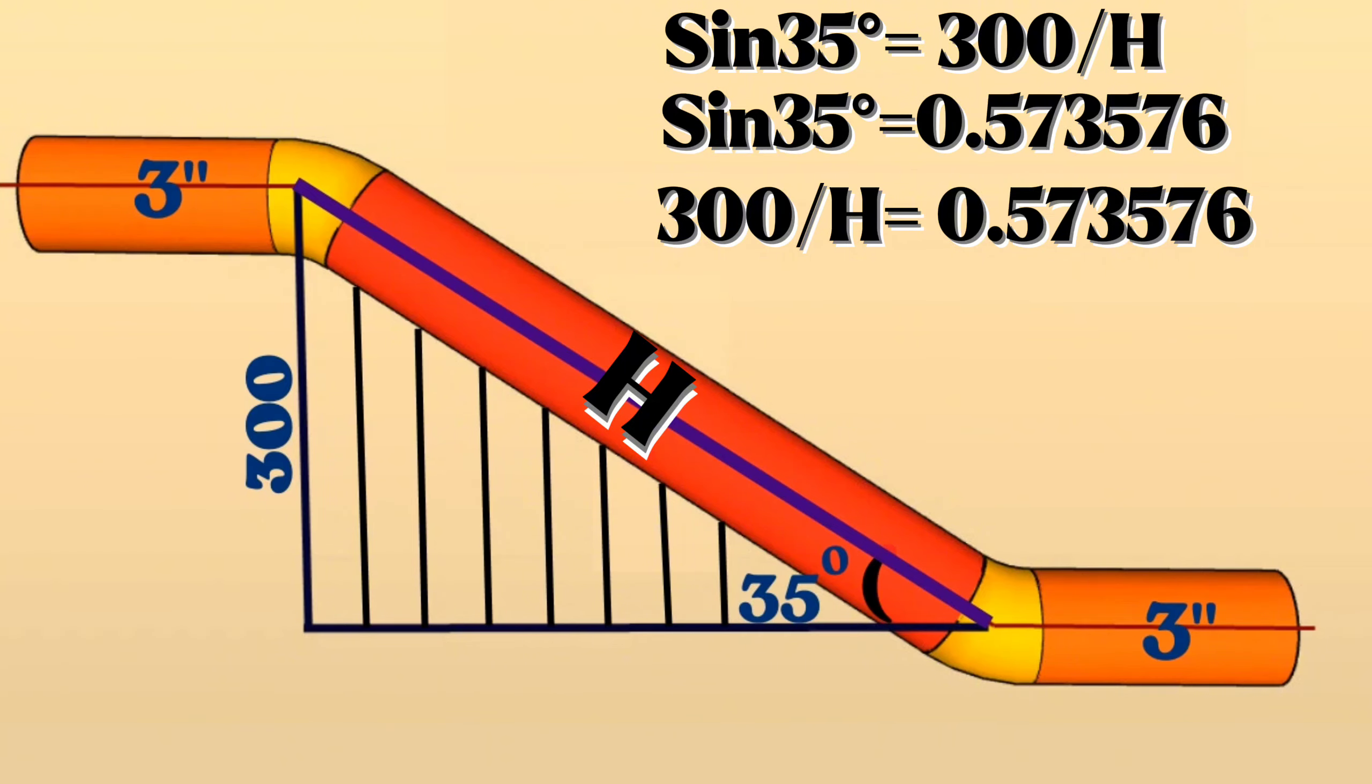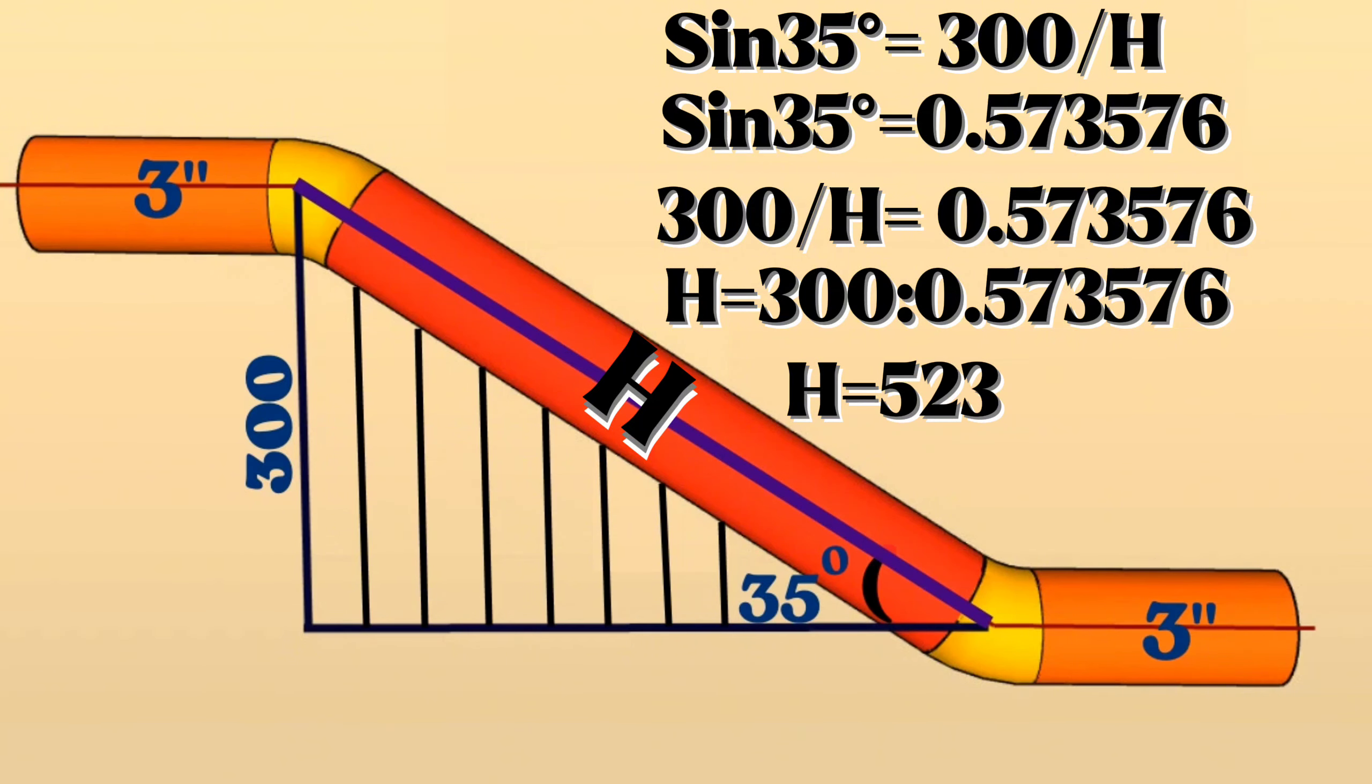Continue to calculation, the H hypotenuse equals 300 millimeters divided by 0.573576. At last, we found the H hypotenuse equals approximately 523 millimeters.